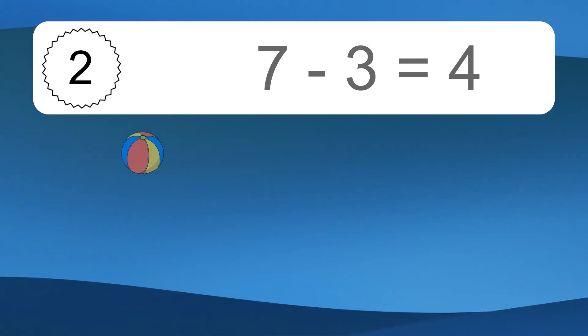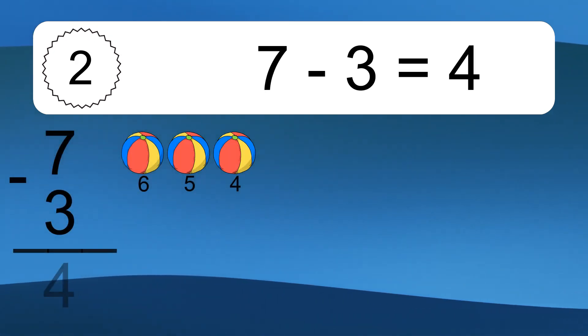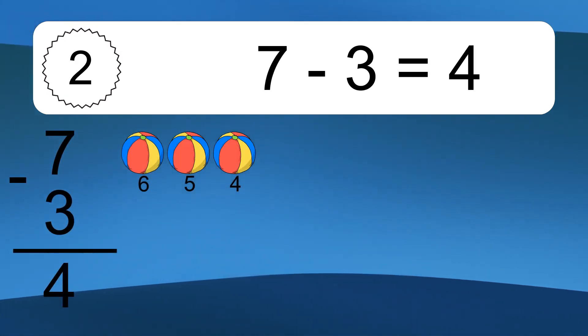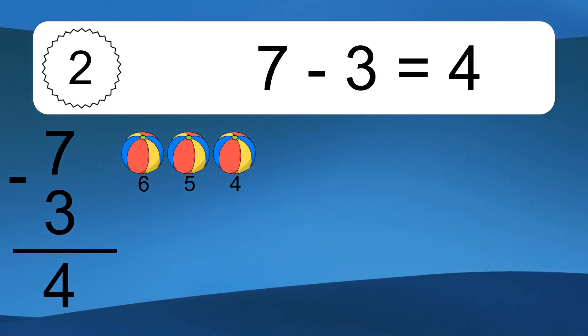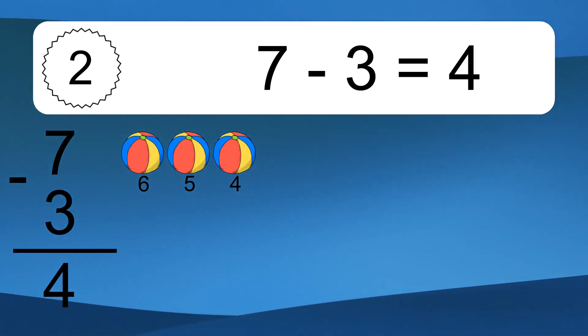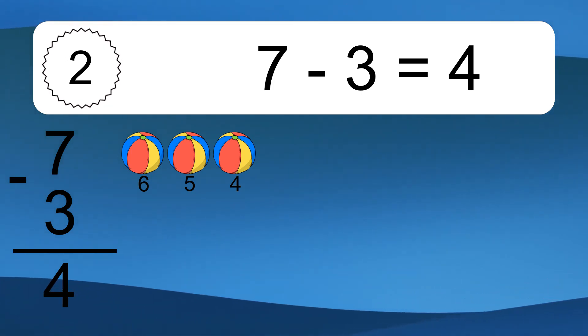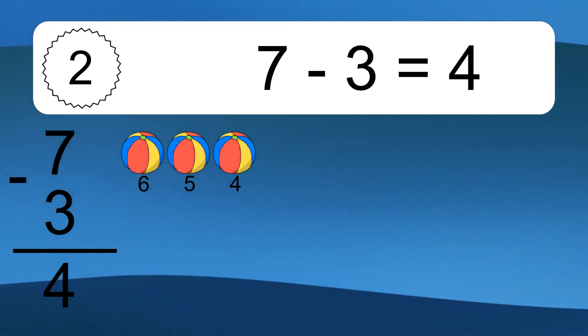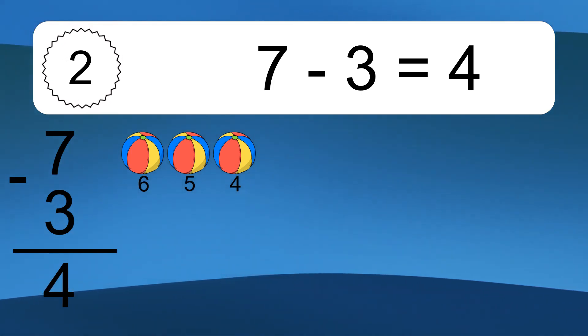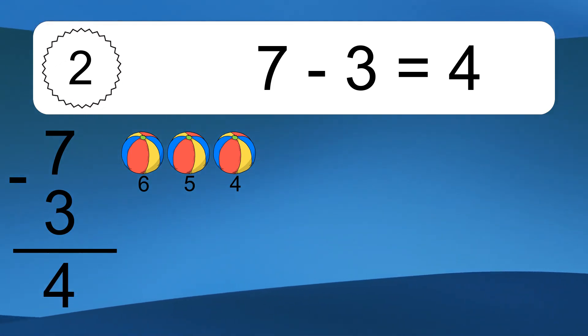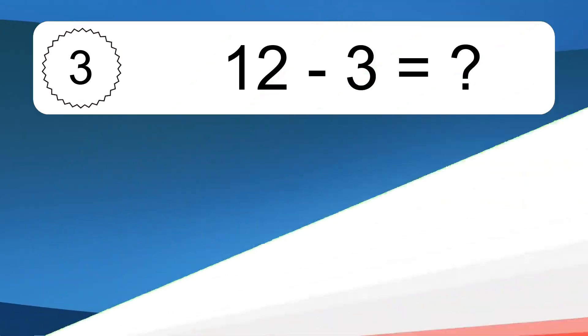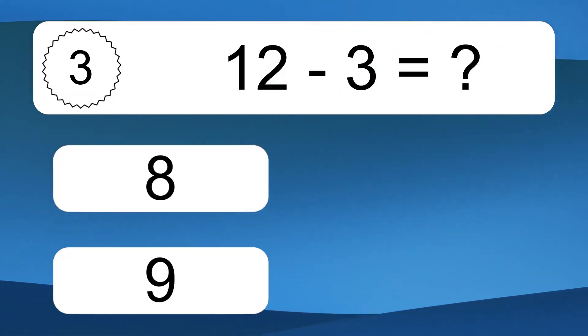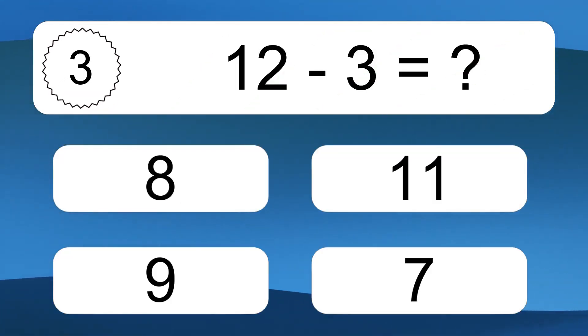Seven minus three equals what? Seven minus three equals four. Let's count it: six, five, four.